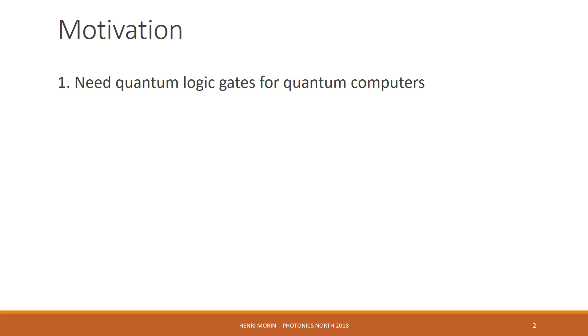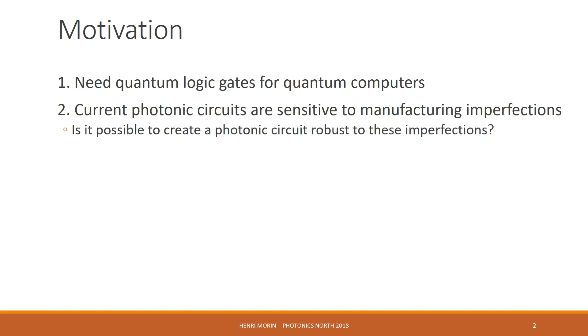One suitable way of achieving this is to use photonic circuits. The problem is, current photonic circuits are sensitive to manufacturing imperfections. So the question is, is it possible to create photonic circuits robust to these imperfections? Turns out the answer is yes, and the key is to use geometric phase.